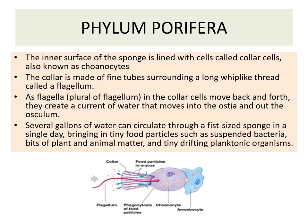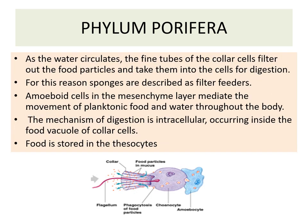In this diagram you can see the structure of coanocytes with collar, with flagellum, a body, and the movement of food. The food is collected by the whiplash movement of the flagella. The food enters into the body, it is engulfed by holozoic nutrition, and through phagocytosis the food is taken in. As the water circulates, the fine tubes of the collar cell filter out the food particles and take them into the cell for digestion.